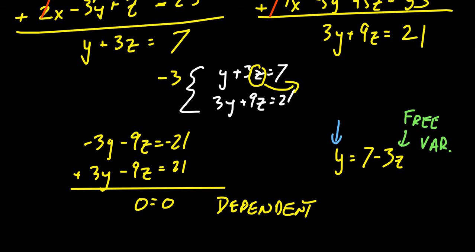Now, y on the other hand is going to be a dependent variable. It will depend on our choice of z. So for example, if we choose z to be zero, then y has to be seven. If we choose z to be one, then y has to be four. There's that dependence relationship that's going to be between them.